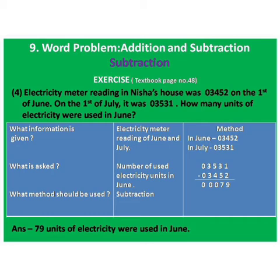Ta method cha column madhe leha. June mahina kiti units use ke lhe hote — 3,452. Ani July mahina madhe 3,531. Then make subtraction. Subtract 3,452 from 3,531. The answer is 79. Then write the answer in one sentence: 79 units of electricity were used in June.